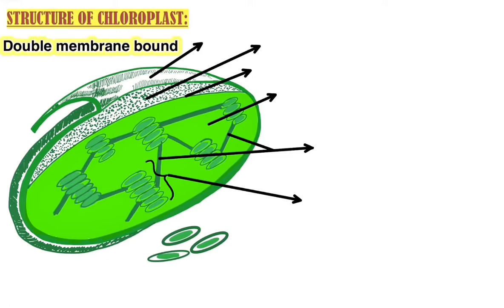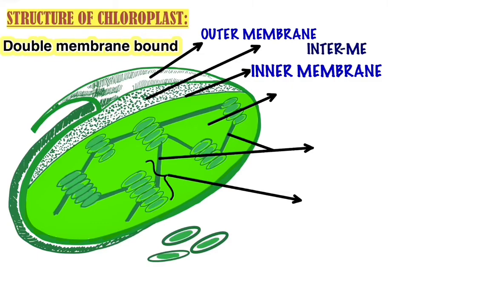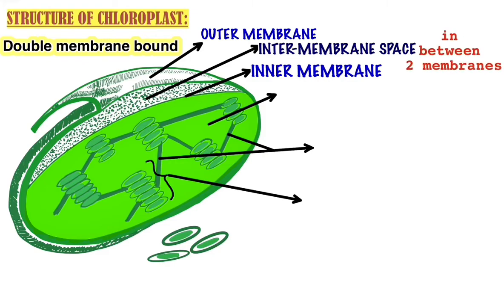Here in this picture you can see a detailed structure of chloroplast. As we have learned, chloroplast is a double membrane bound cell organelle — this is the outer membrane and this is the inner membrane. The space between them is called the inter membrane space, because inter means in between. The total thickness of the outer and inner membrane is approximately 50 to 70 angstrom.